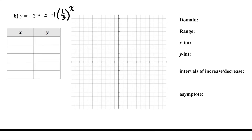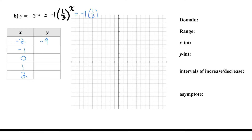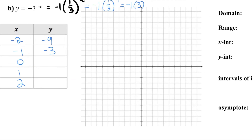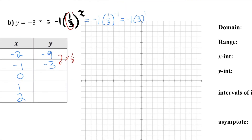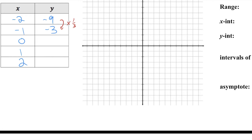Let's graph this function. I'll choose x values just between negative two and two for this function, and then calculate the corresponding values of y. If I substitute negative two for x, I would have negative one times a third to the negative two, which is the same as negative one times three squared, which would be negative nine. If I substitute negative one, negative one times a third to the negative one is the same as negative one times three to the positive one, so that would be negative three. The base of the power is a third, so my next y value would be negative three times a third, which is negative one. Then the next one will be negative one over three, approximately negative 0.33, and then approximately negative 0.11.